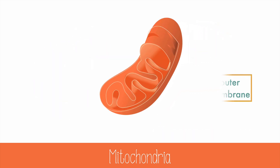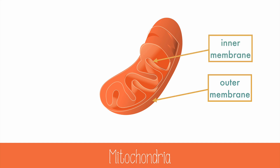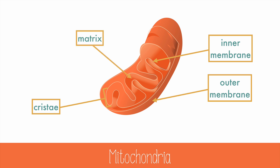The mitochondria has an outer and an inner membrane. The inner membrane is bunched and folded, and the folds are called cristae. Inside the cristae, and between the inner and outer membrane, is a fluid called the matrix. Because mitochondria are small and also have their own DNA, some scientists think that mitochondria may have developed from prokaryotes like bacteria.